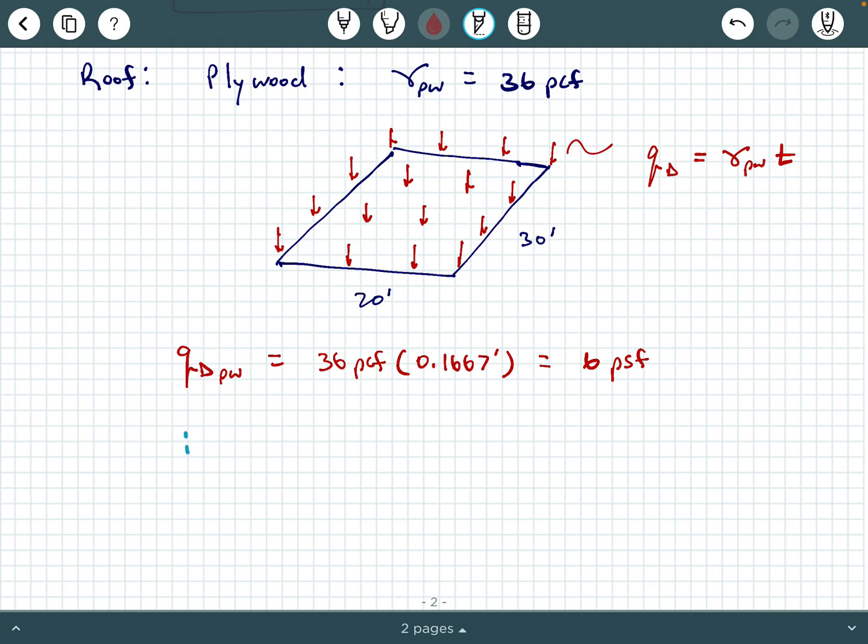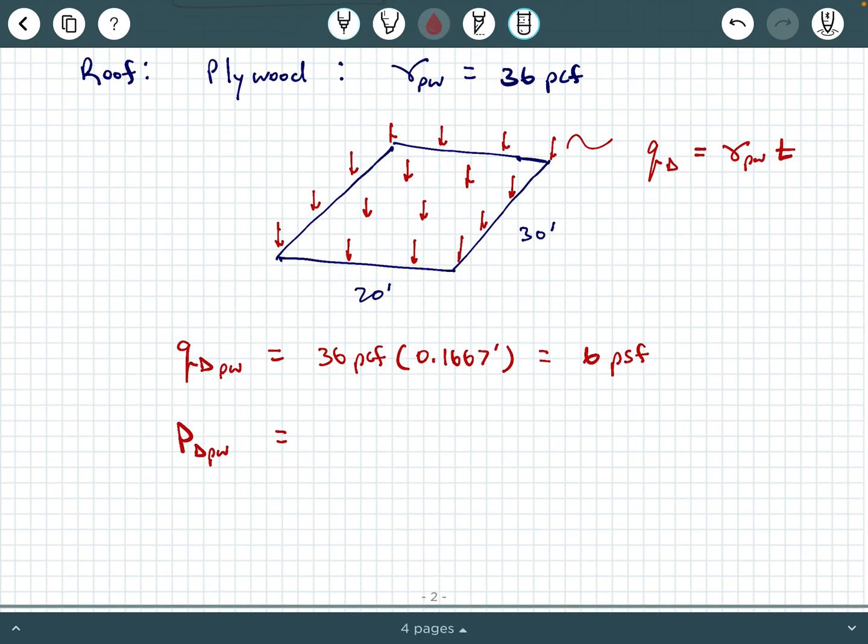And then finally, we can get P dead of the plywood. So let's label that plywood so we don't maybe get it confused with the dead load of the second floor. Or, instead of plywood, what do we call it here? We call it 2 for second floor, just for consistency purposes. How about we call it R for roof? It doesn't really matter what you label these things as long as you label them with terms that make some kind of sense. So the dead load for the roof would be Q dead of that plywood times 20 feet times 30 feet. And so we would get 6 times 20 times 30. And of course, we get 3,600 pounds. But again, we wanted it in kips. So we would say P dead roof is 3.6 kips.